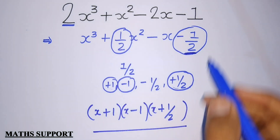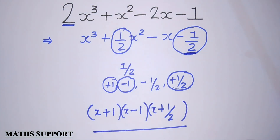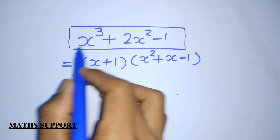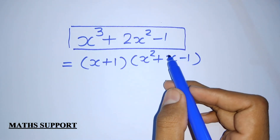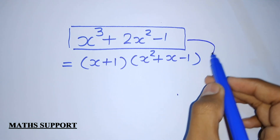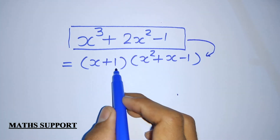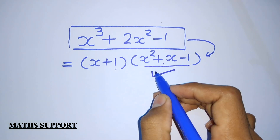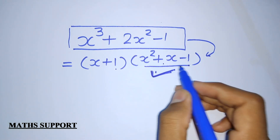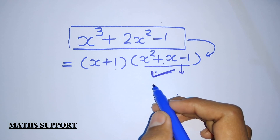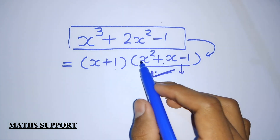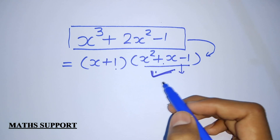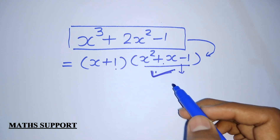We put these values with variable x in front to get the factorized form. However, you cannot apply this method for a polynomial like x³ + 2x² − 1, because its factors are (x + 1) and (x² + x + 1) — meaning it has one quadratic factor that cannot be further factorized into linear form, as it is a pure quadratic factor.